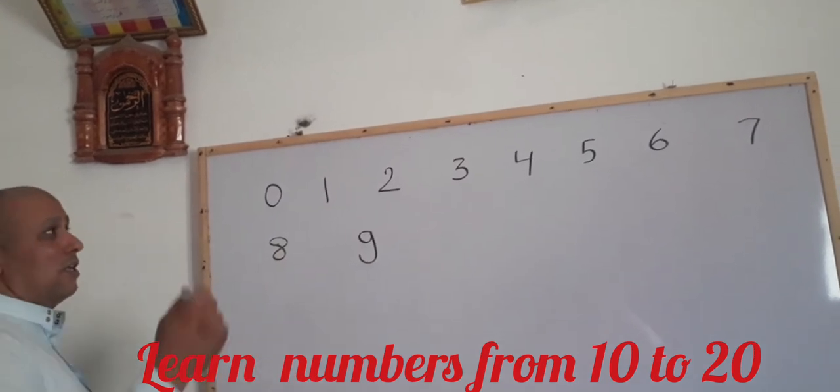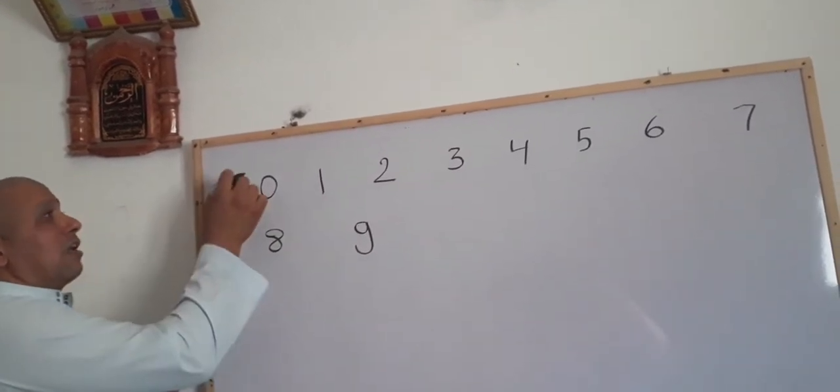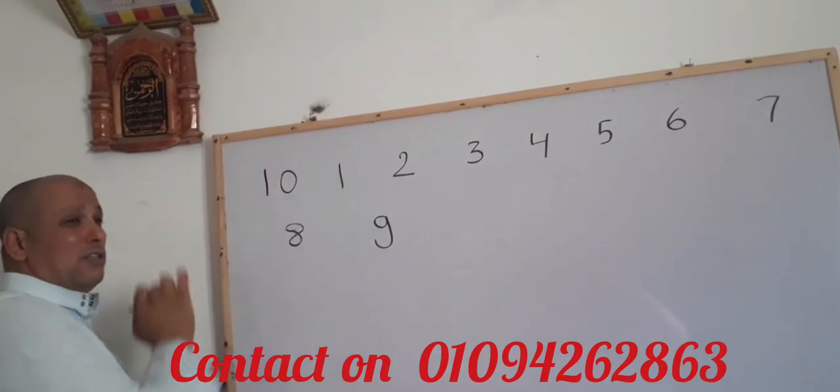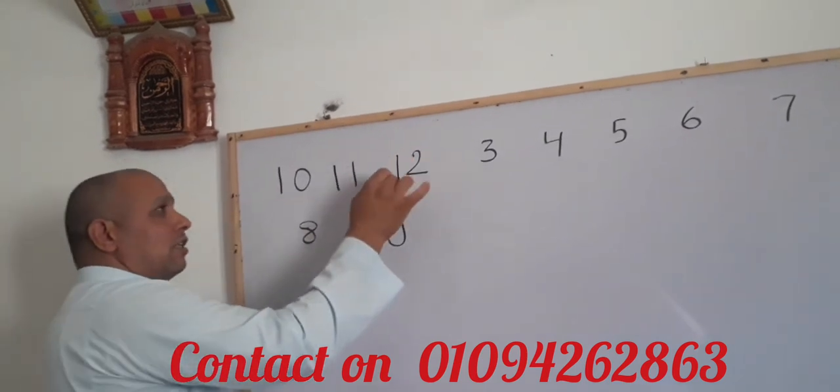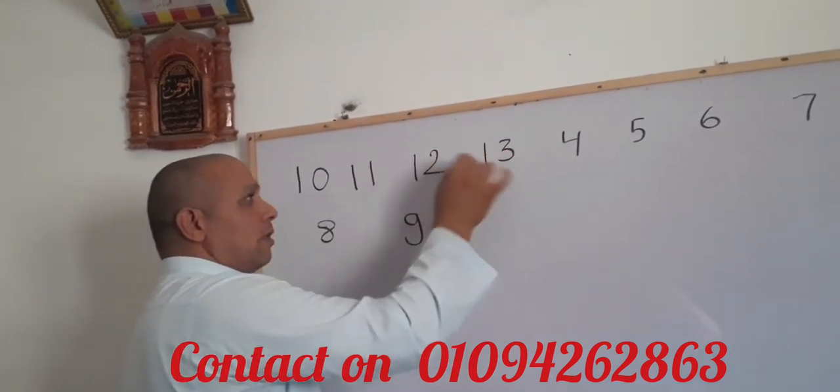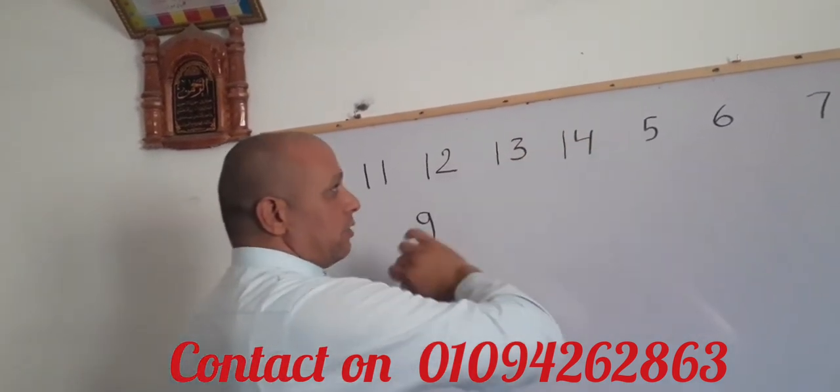So one here, so it will be 10. One here, it will be 11. And one here, it will be 12. And this will be 13. And 14 here.